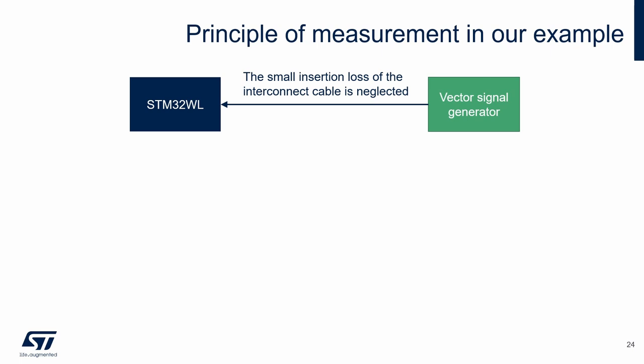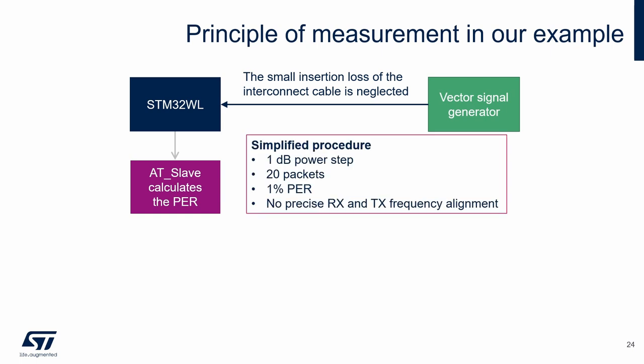We use a vector signal generator connected directly to the STM32WL board by a cable. A small insertion loss of the cable is neglected in our case — for this verification measurement it is okay, but for more accurate results it must be compensated. The power level of the test signal is set directly in the generator, so no additional attenuator is needed. Packet error rate is calculated in the AT Slave firmware loaded on the tested board. We simplify and speed up the procedure by using 1 dB power steps and 20 test packets, with a 1% packet error rate as the threshold.